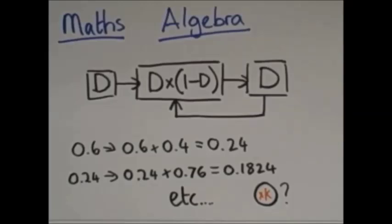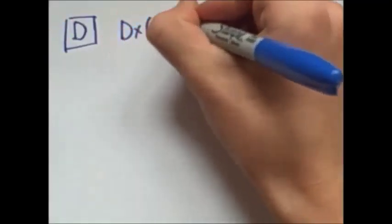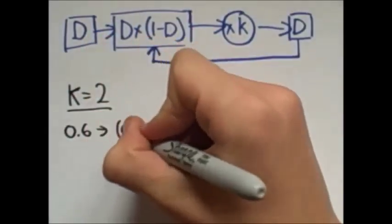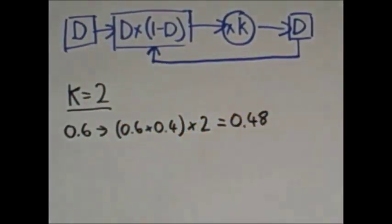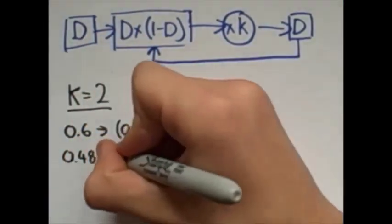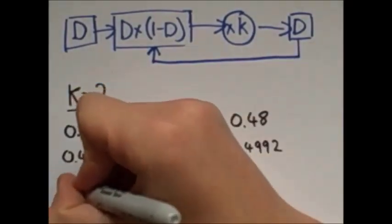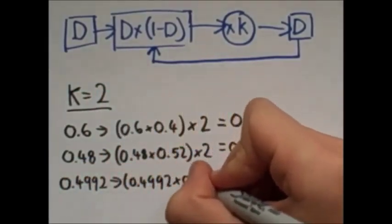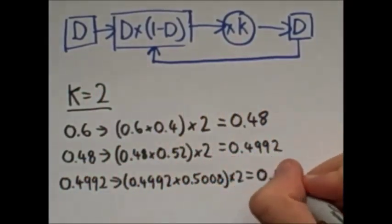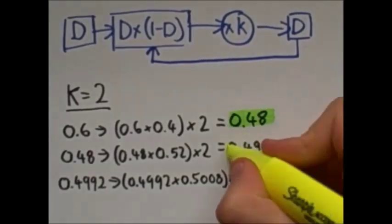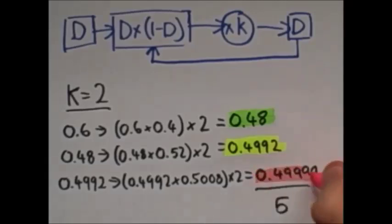But what happens if we add a constant k? This time the constant is going to be equal to 2. So we start again, 0.6 times 0.4 times 2. This is 0.48, then 0.48 times 0.52 times 2 is 0.4992. So 0.4992 times 0.5008 times 2 is 0.49999, etc. This is obviously moving towards 0.5, and then if we have different values of k, the pattern changes.